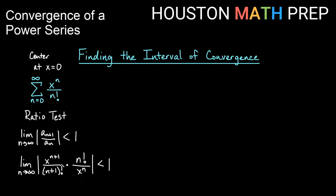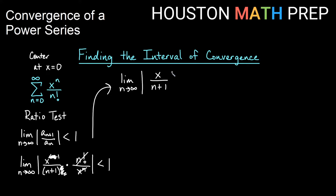Simplifying: we reduce n copies of x, leaving one x on top, and n factorial cancels everything in (n plus 1) factorial except the leading (n plus 1). So we get the limit as n approaches infinity of the absolute value of x over (n plus 1), less than 1.